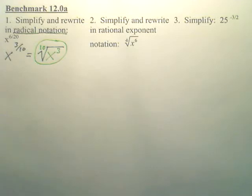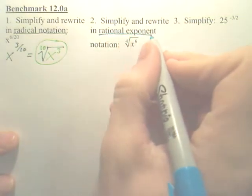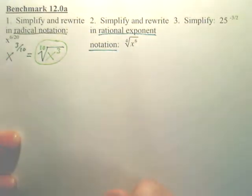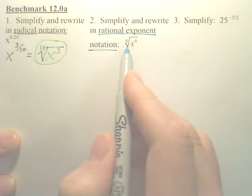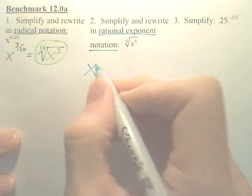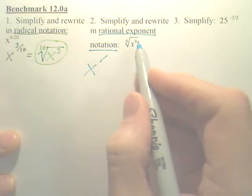Next one. We need to change it to rational exponent notation. That means change it to this one. First thing we do is we have to change this to fraction power. So it's either 4, 6, or 6 fourths.